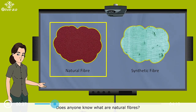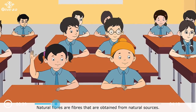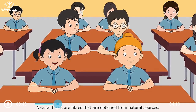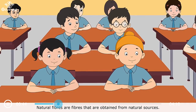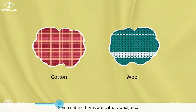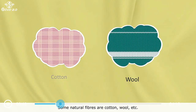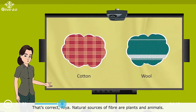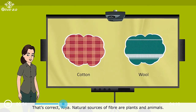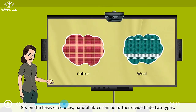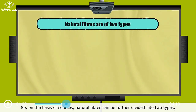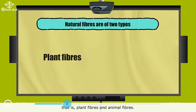Does anyone know what are natural fibres? Natural fibres are fibres that are obtained from natural sources. Some natural fibres are cotton, wool, etc. That's correct, Rhea. Natural sources of fibre are plants and animals. So, on the basis of sources, natural fibres can be further divided into two types: plant fibres and animal fibres.